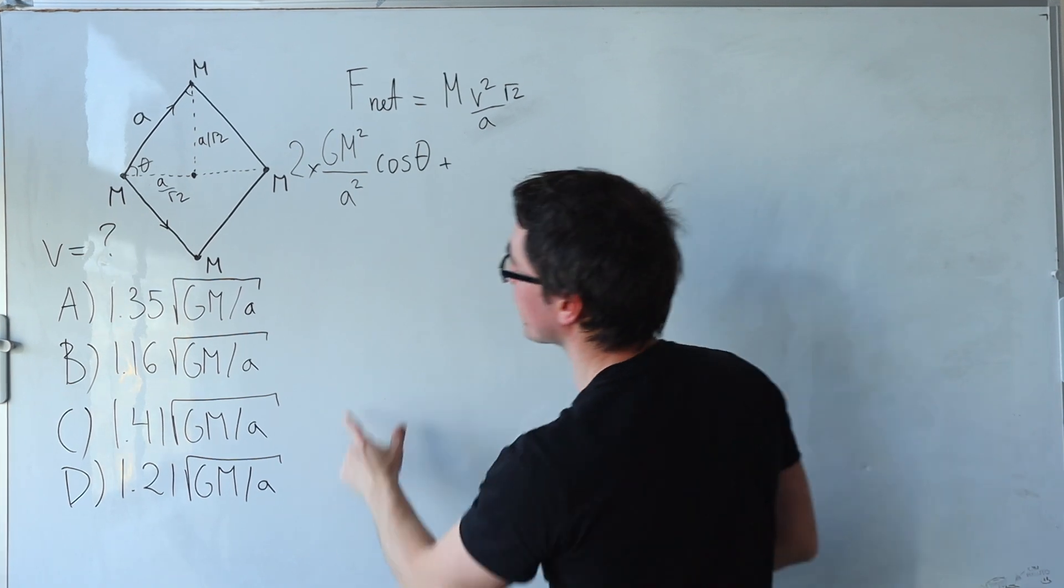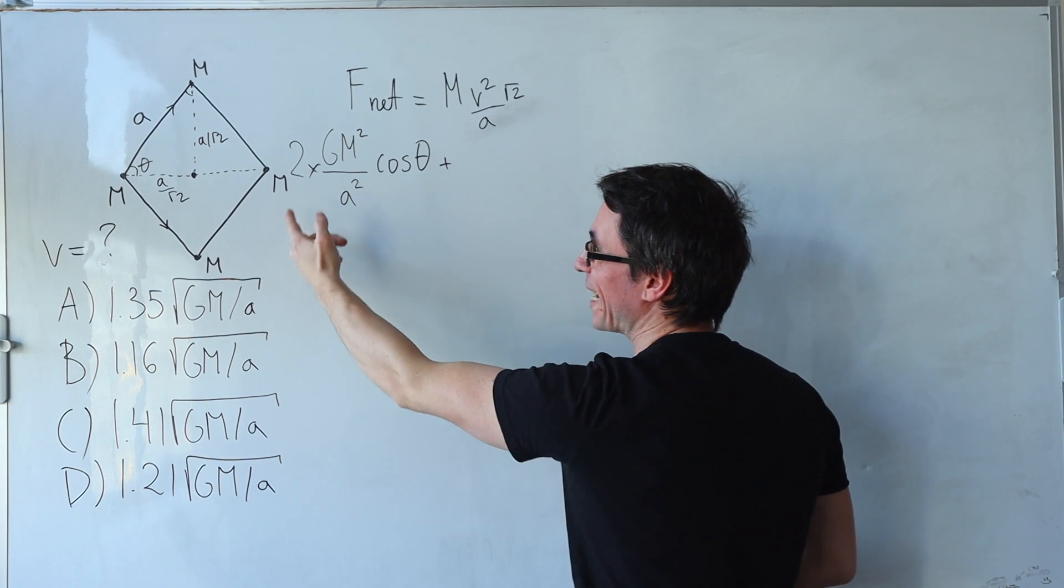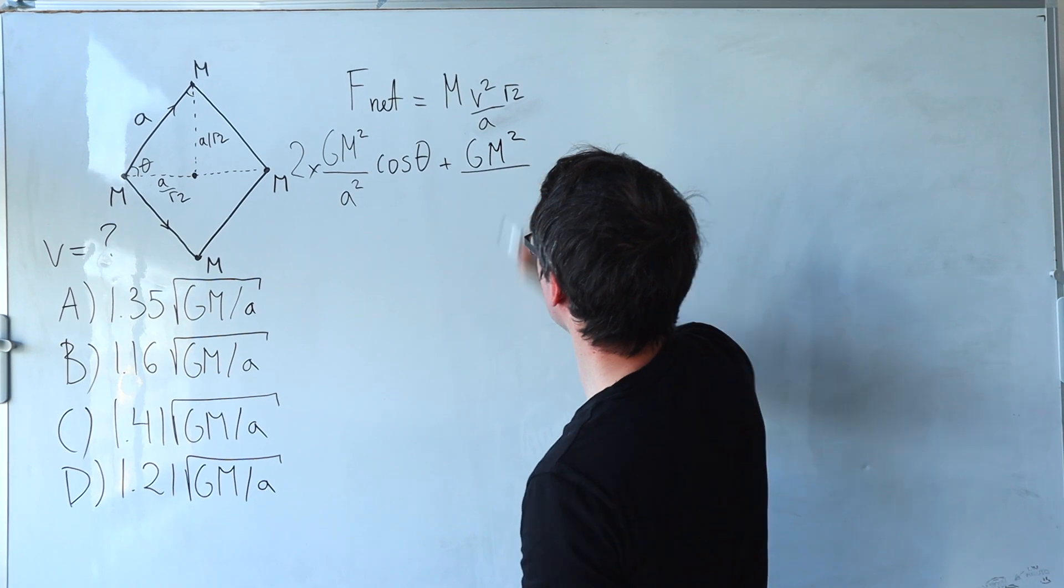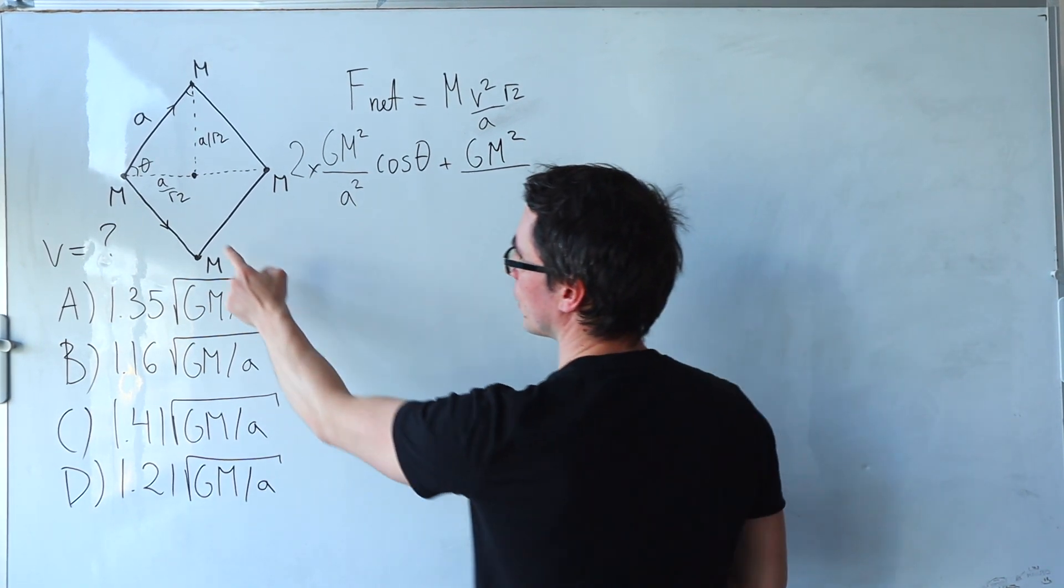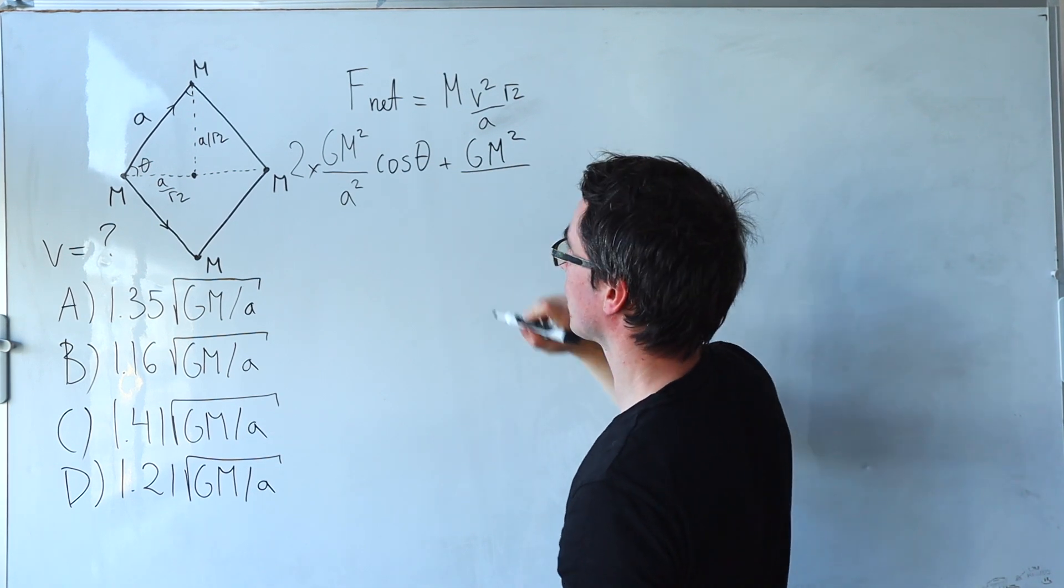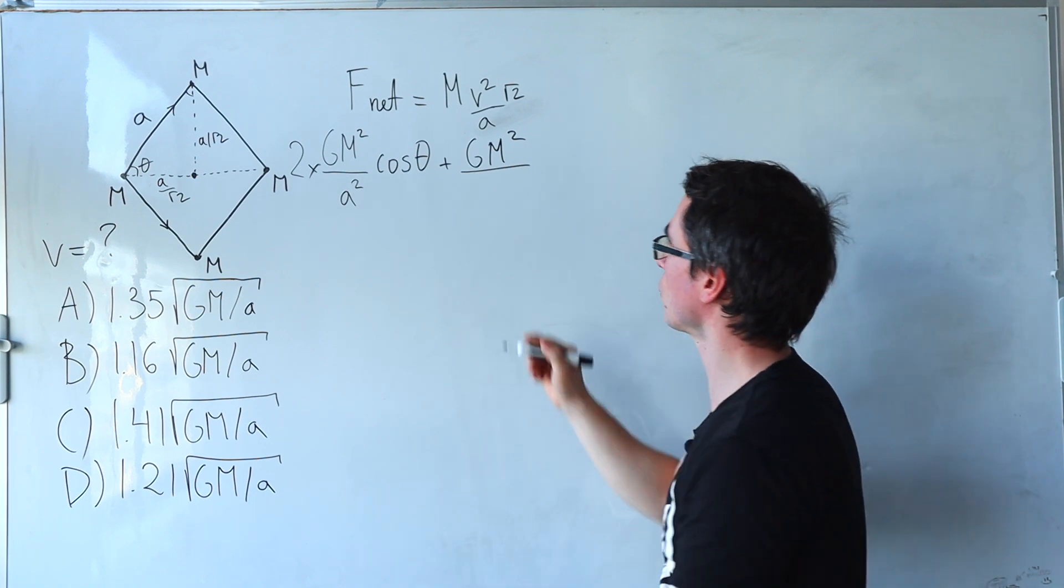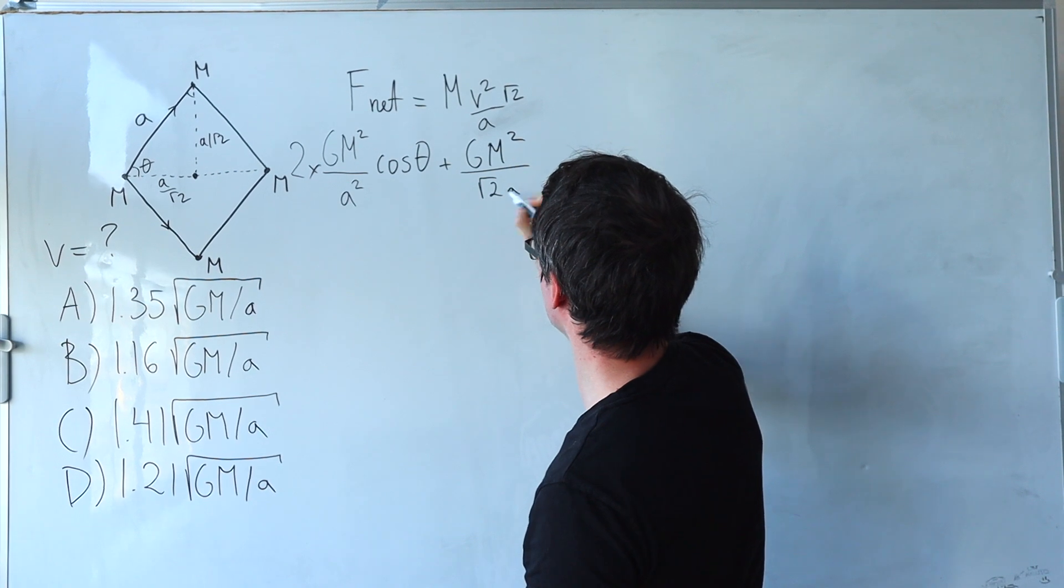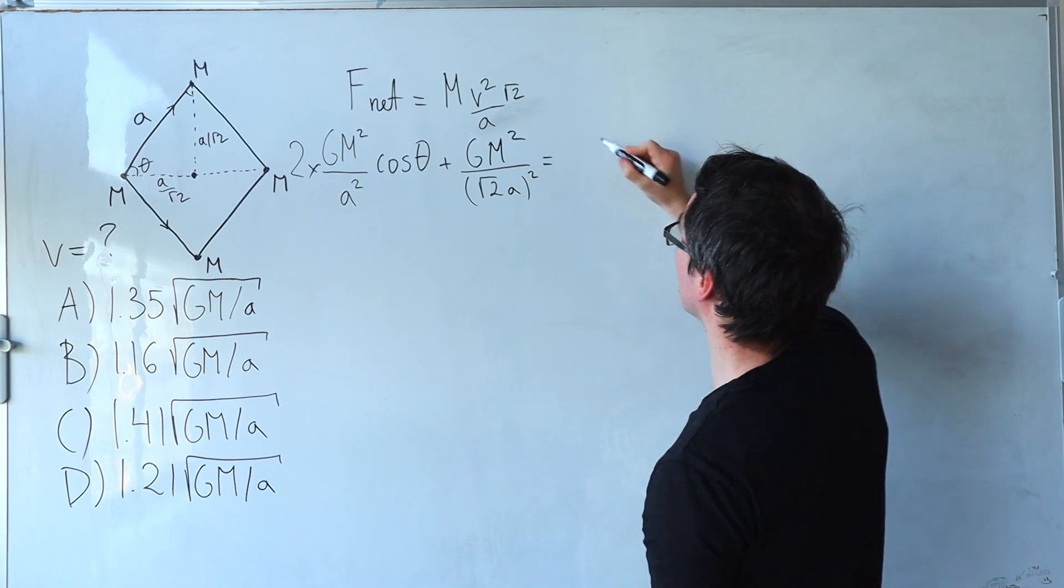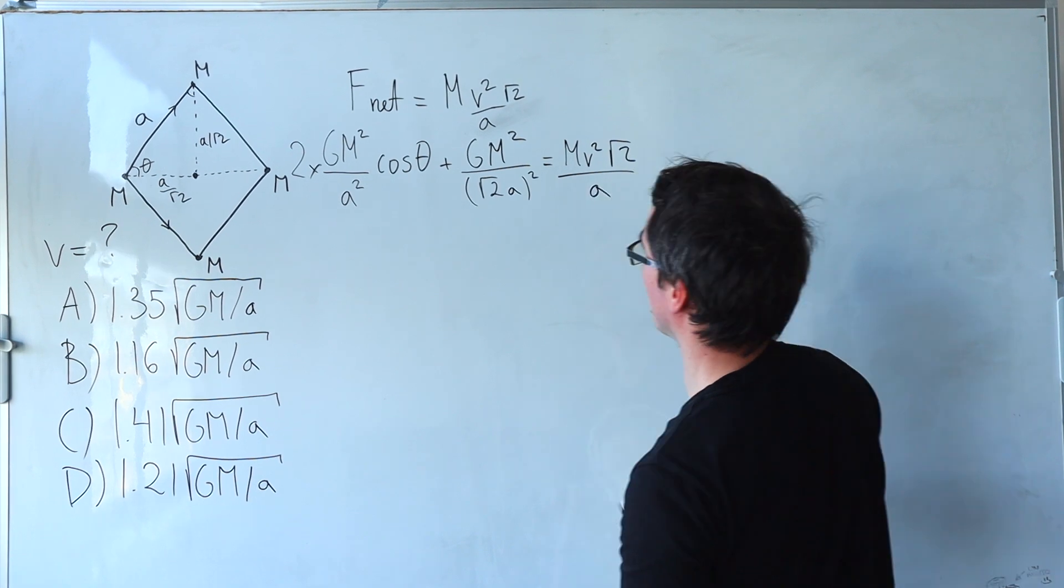After that I'm going to be adding the force between m and this far away m here plus g m times m, divided by the distance from here to here. Well this thing will just be equal to a over root 2 plus a over root 2 which is 2 root 2 over 2 which is just root 2 a. Let's not forget to square this. And this thing here will be equal to m v squared root 2 divided by a.